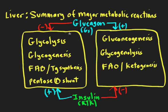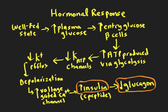Now, as a review of what happens to these hormones in the well-fed state: when we're in the well-fed state, plasma glucose is increased because we just ate a carbohydrate-rich meal. That glucose can enter the beta cell through facilitated diffusion via a glucose transporter, where it's metabolized through glycolytic enzymes, producing ATP for the beta cell.